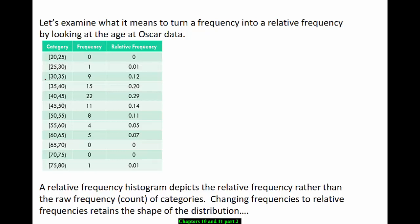Notice that we have all the categories defined here and how many actors were in each category. This 15 on the category that goes from 35 to 40 will correspond to the height of that age category on our histogram.